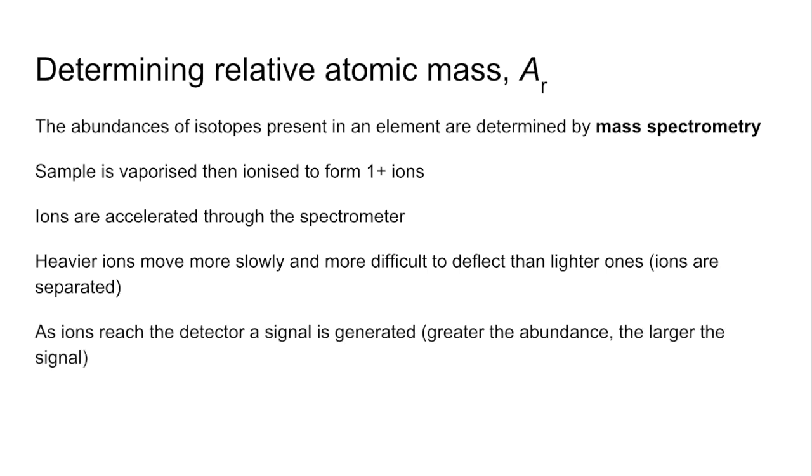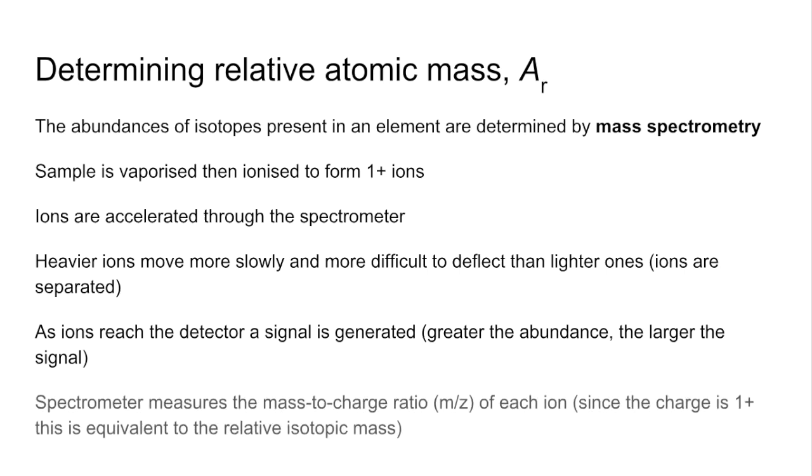As the ions reach the detector, you get a signal. The greater the abundance, so the more of a particular isotope, the larger its signal is going to be. And then the spectrometer measures the mass-to-charge ratio, or M over Z for short, of each ion. And because your charge is 1+, that's going to be equivalent to the relative isotopic mass.